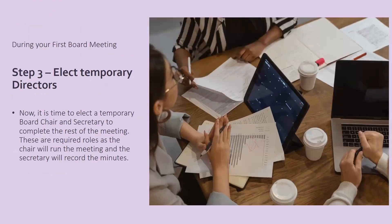Next, you will elect temporary directors. At this time, the founder must step down as the sole incorporator and hand over the meeting to a temporary chair and a temporary secretary. These two must be elected at this time to run the rest of the meeting — these are required roles to continue the meeting. In some cases, the founder will be elected as temporary chair, or it can be someone else, but all this has to be documented in your paperwork. We do have a part two to this training that will teach you how to complete all the paperwork that goes with this part one training.